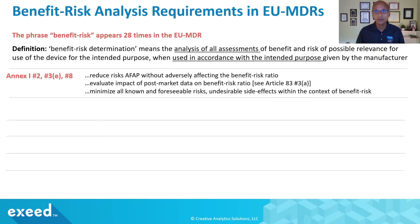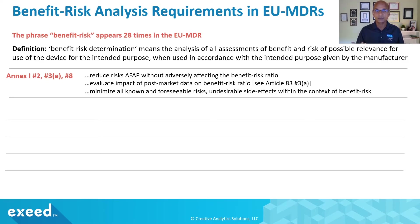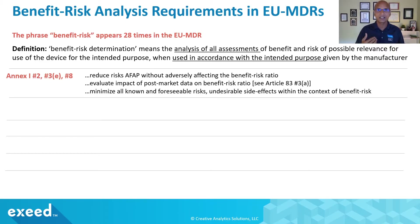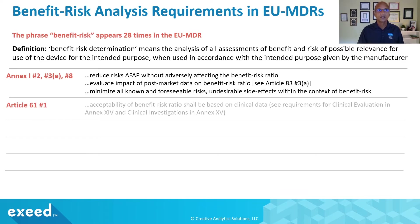In Annex 1 there are specific requirements to reduce all risks AFAP — as far as possible — without adversely affecting the benefit-risk ratio. Now this term 'ratio' can be very confusing, and I will talk about that in a bit. There is also a requirement to evaluate the impact of post-market data on the benefit-risk ratio, so the expectation is that you will do it continually and see how benefit-risk is changing over time, minimizing all known and foreseeable risks and undesirable side effects within the context of benefit-risk on an ongoing basis.